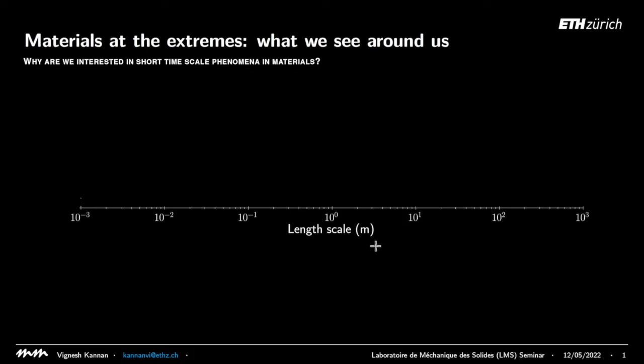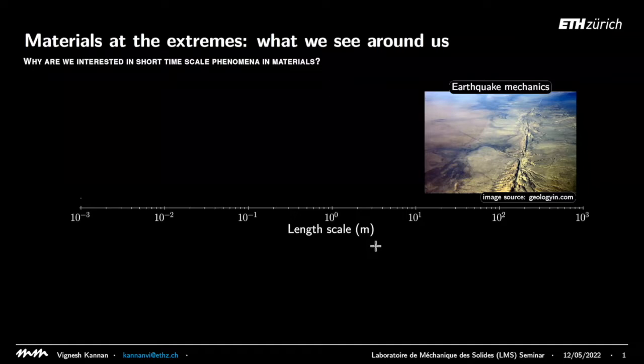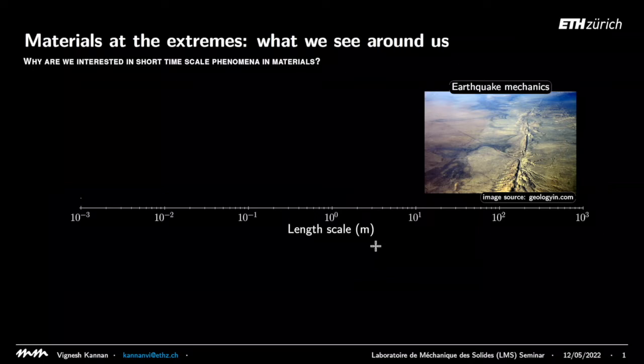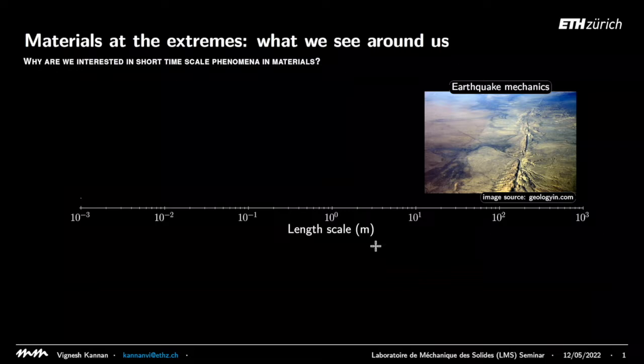To give you a broad overview of why people like to study materials at their extremes — this is an example of an earthquake. Essentially at length scales of many kilometers, this is typically treated as an intersonic crack, or a crack that's propagating inside a heterogeneous medium at different speeds. This is how modern experimental mechanics has made strides in understanding how earthquakes occur.